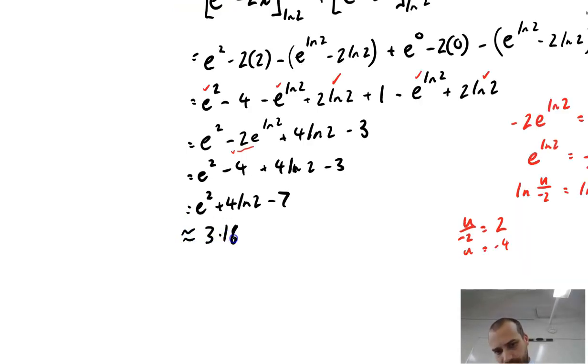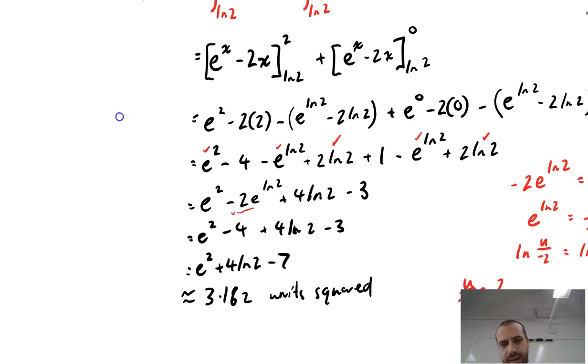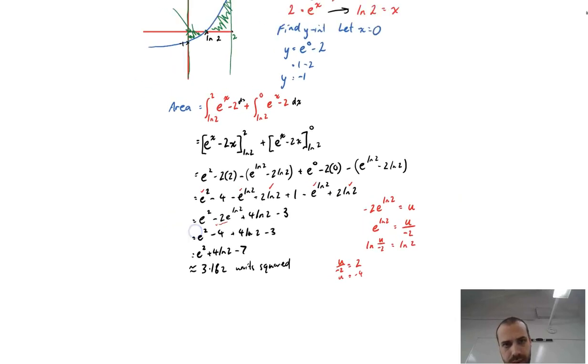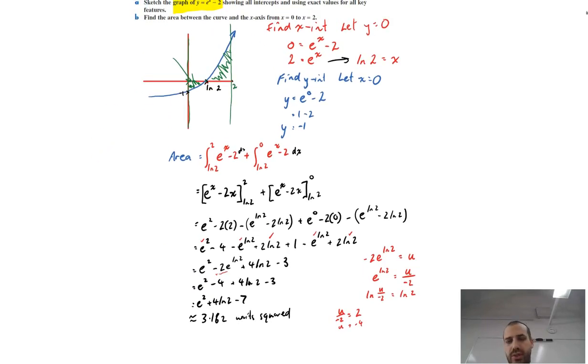Approximately 3.162 units squared is the area under, or is the area between the curve and the x-axis, there and there. So a little bit of work to do there, it's a tricky question, but that's how to get it done.